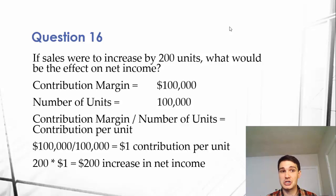So, I just took the contribution margin, which is $100,000, and divided that by the number of units, which is 100,000. So, contribution margin divided by the number of units equals the contribution per unit. We get a $1 contribution per unit. It's easy enough, right?